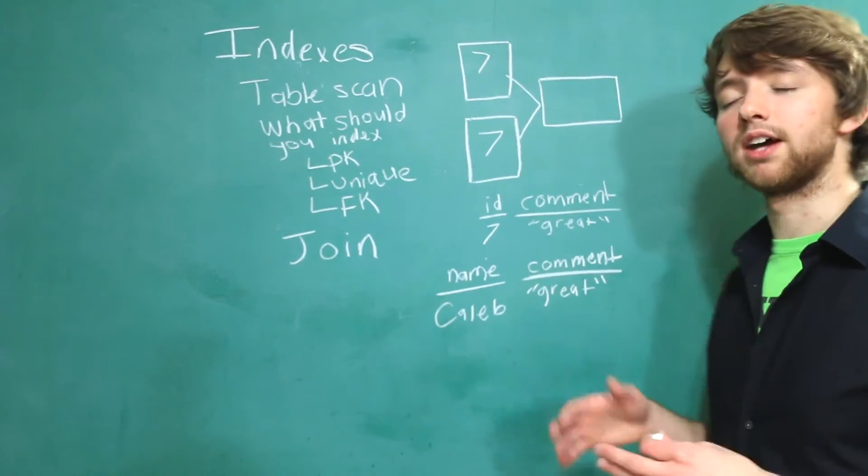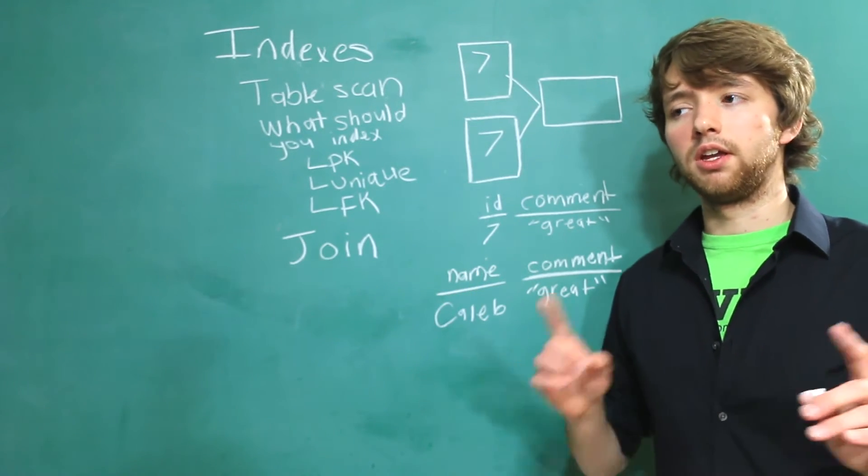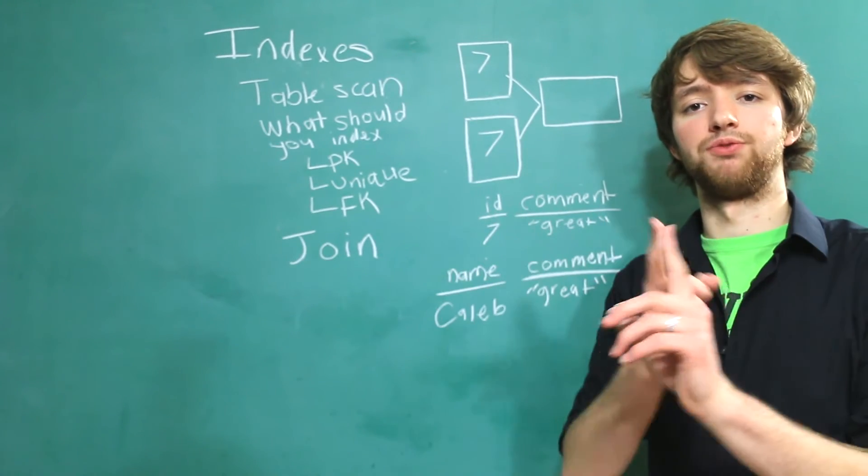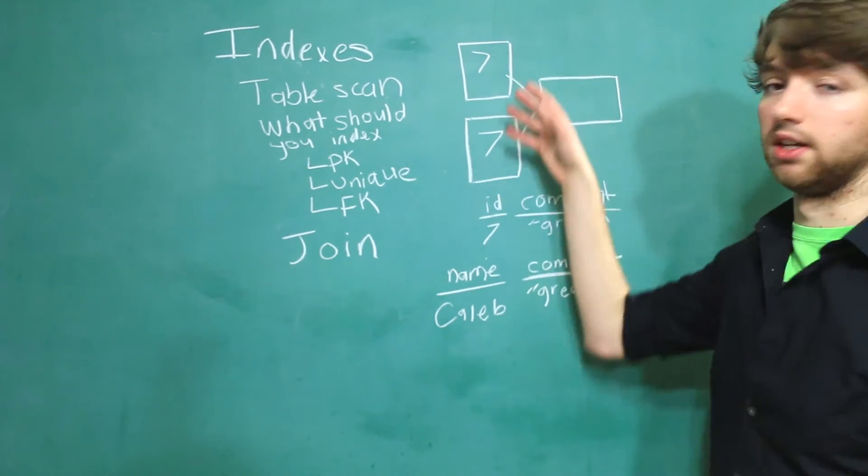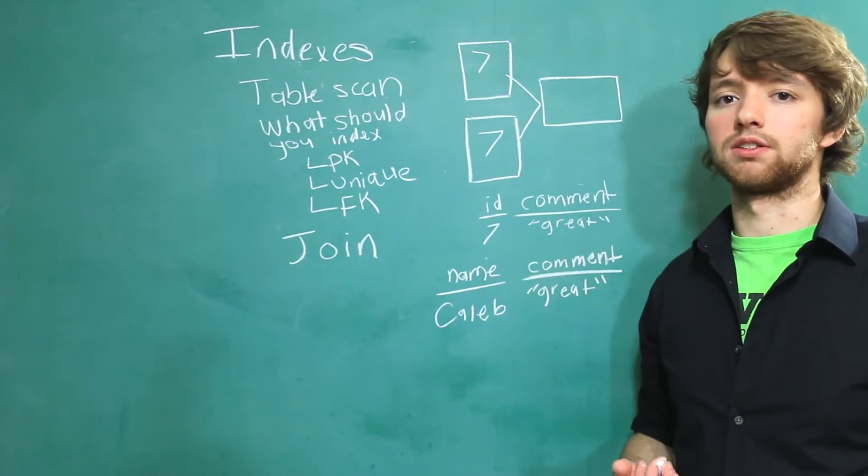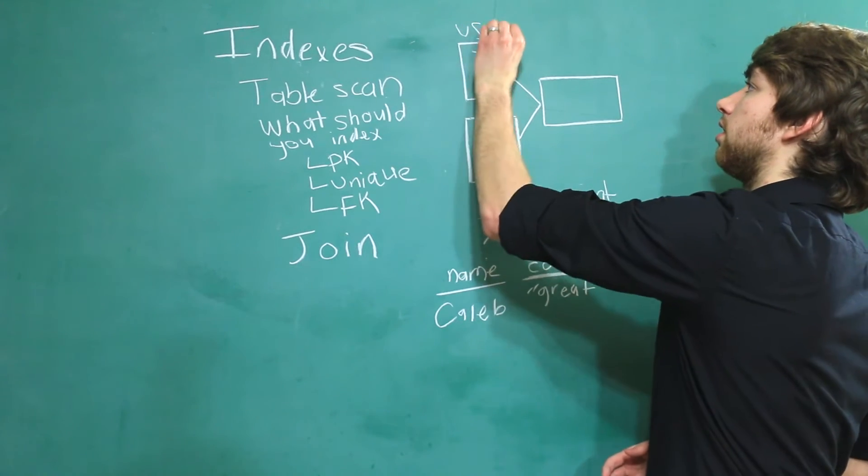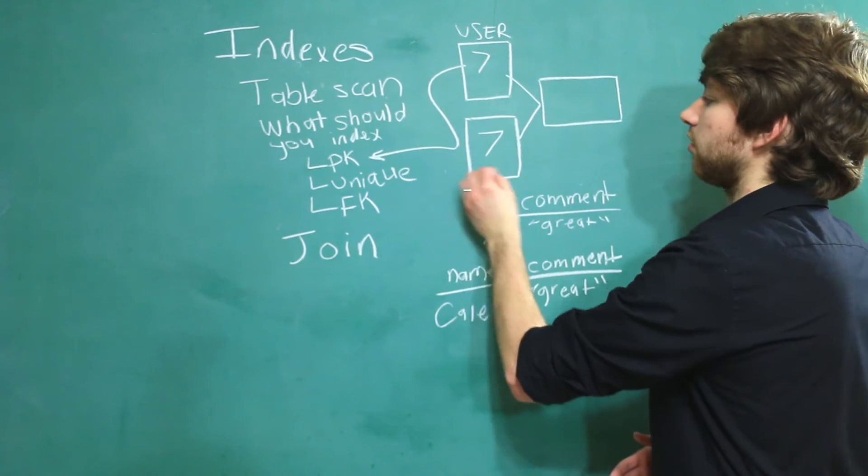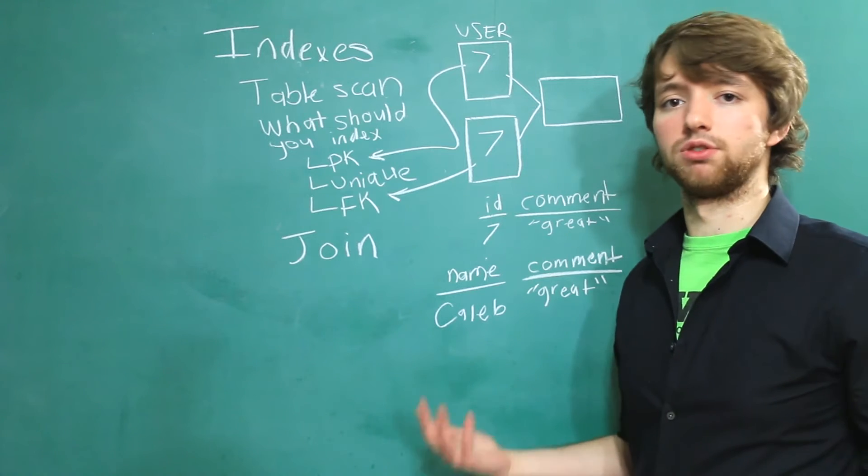But essentially, anytime you're going to be joining two tables very often, you might want to consider indexing the columns that they share. So this one has a user ID and this one has a user ID, and you use those to kind of combine the tables. You're one up here in the user table. That's going to be a primary key, which is probably going to be indexed by default. But the one over here is going to be a foreign key. So you're going to need to index that if you so desire.